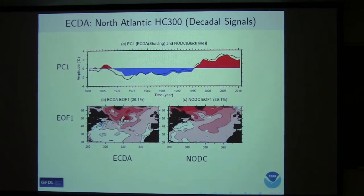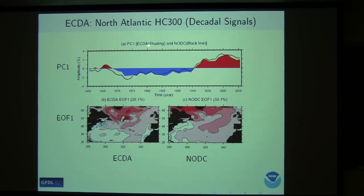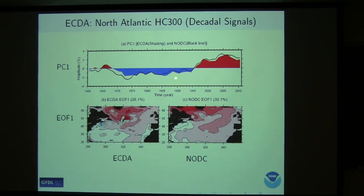Now we extend this from ENSO prediction to decadal prediction. First we want to make sure that in our ECDA system we capture the decadal signal. Here I show the North Atlantic heat content top 300 meters. The shading shows the ECDA and the black line shows the NODC observation. The spatial pattern and time series are pretty close and they show multi-decadal variation. So the data assimilation captures this multi-decadal signal.